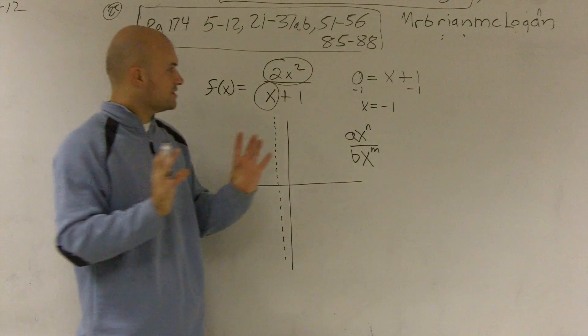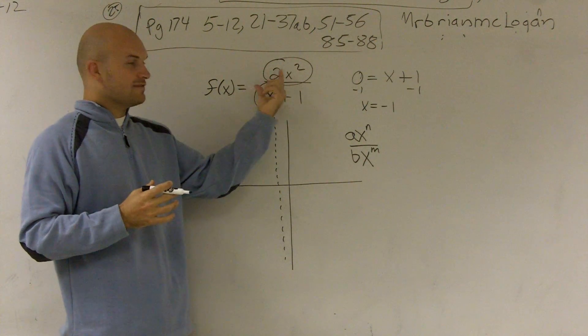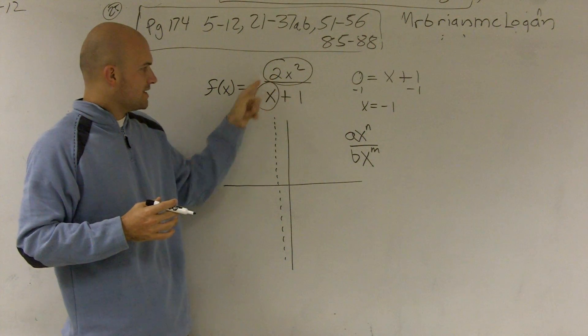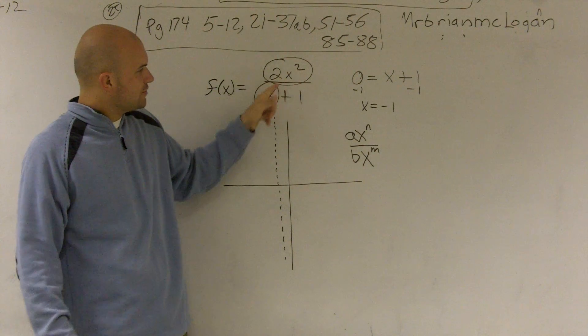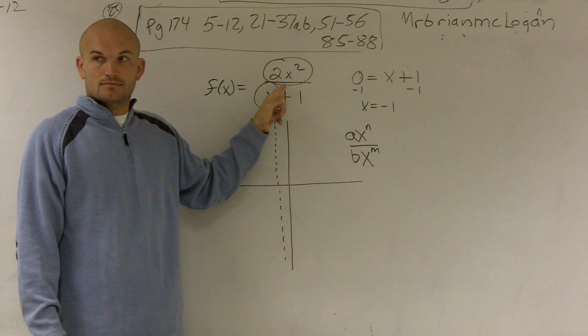If you just look at the leading coefficient, every leading term has a coefficient. This one has two. This one has one. And each one has a degree. This one has a degree of two. This one has a degree of one.